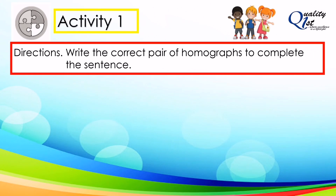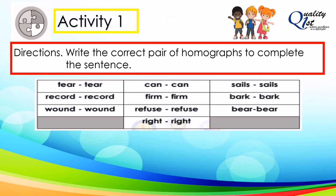For Activity 1, you're going to write the correct pair of homographs to complete the sentence. The homographs are: tear and tear, record and record, wound and wound, can and can, firm and firm, refuse and refuse, right and right, sails and sails, bark and bark, and bear and bear. Are you ready?